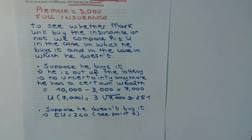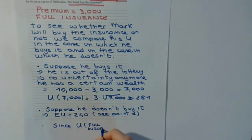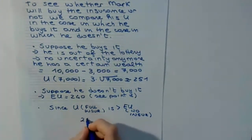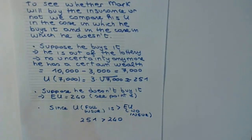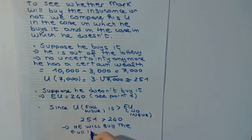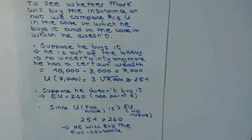So what will Mark do? Since the utility with full insurance (approximately 251) is larger than the expected utility with no insurance (240), Mark will buy the full insurance. When deciding whether an individual will buy insurance, compare the utility given by the full insurance with the expected utility of participating in the lottery.